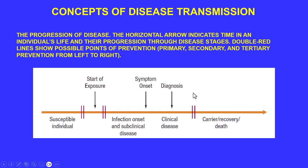The tertiary intervention stage might involve massive antibiotics, antivirals, isolation, or if it's parasitic, physically removing parasites along with antiparasitic medication. After this comes the outcome: carrier — someone who continues to spread the disease; recovery — the individual finally recovers; or death as a result of the disease.